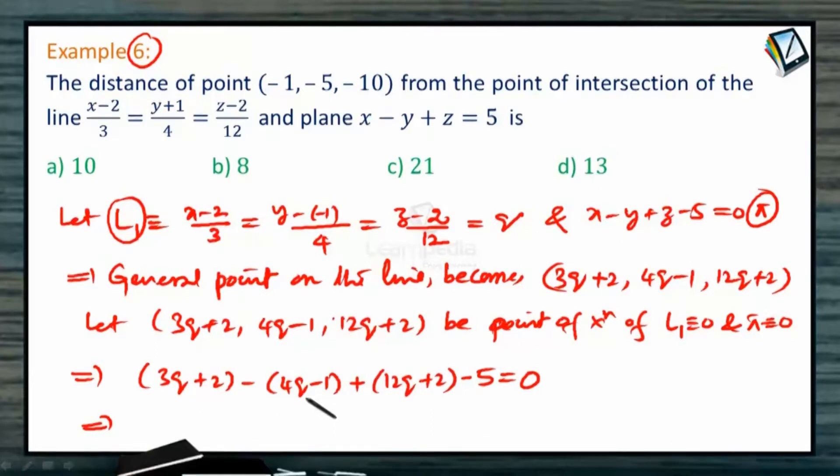3q minus 4q is minus q, 11q, 2 plus 1 is 3, plus 2 is 5, minus 5 is 0. Therefore q equals 0. Once q equals 0, we can find out the points.